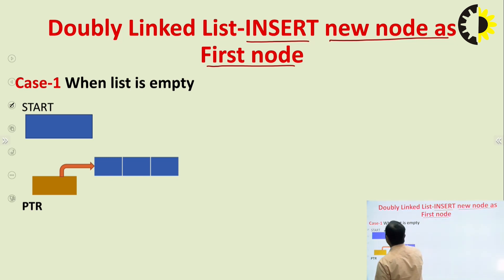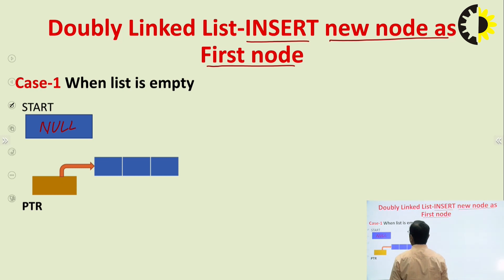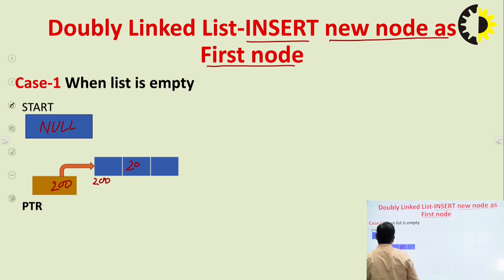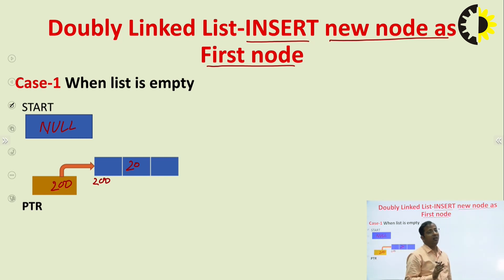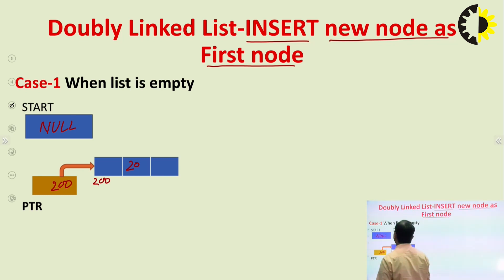Here we are taking the case when the list is empty. When the list is empty, we can identify it because start simply contains null. We have to insert a new node whose address is 200 and the value is 20. There are three common steps for any type of insert operation: first, check whether memory is available; if available, allocate memory using malloc or calloc; then insert the information in the data field.